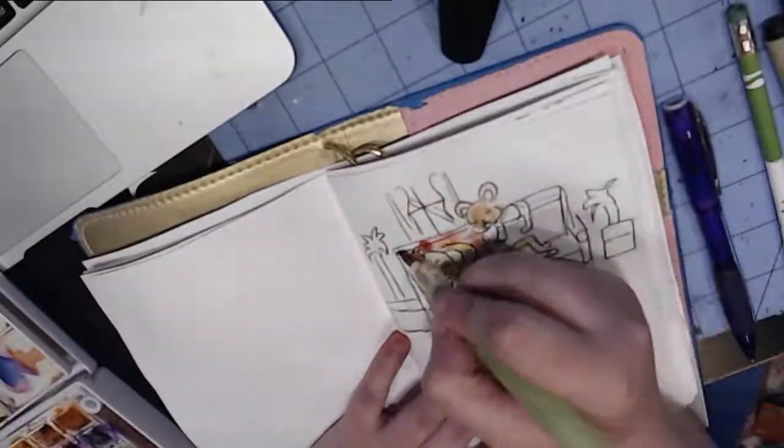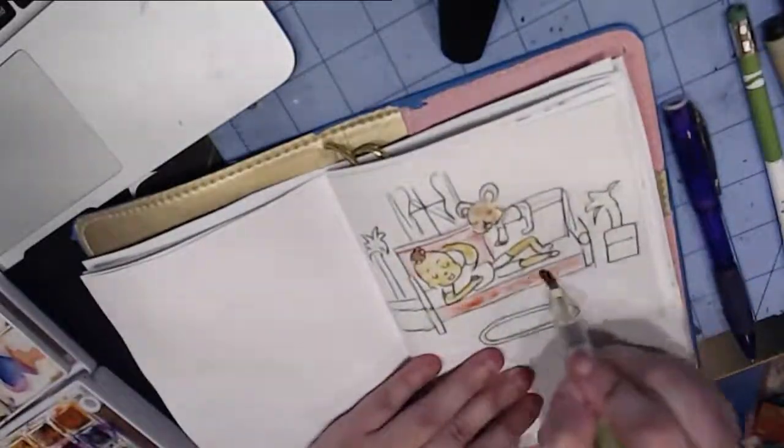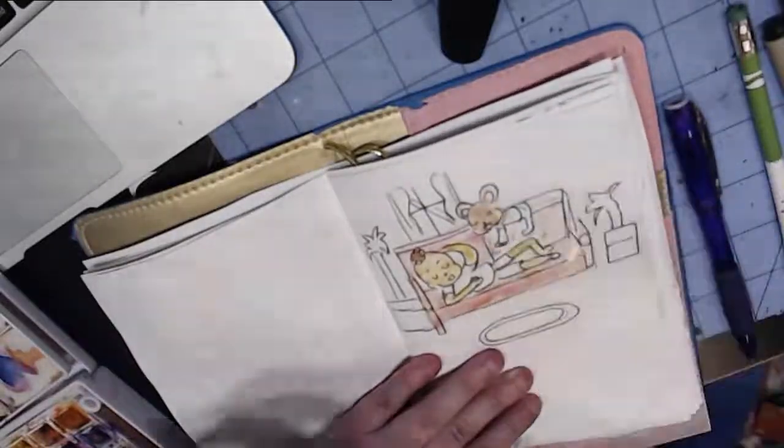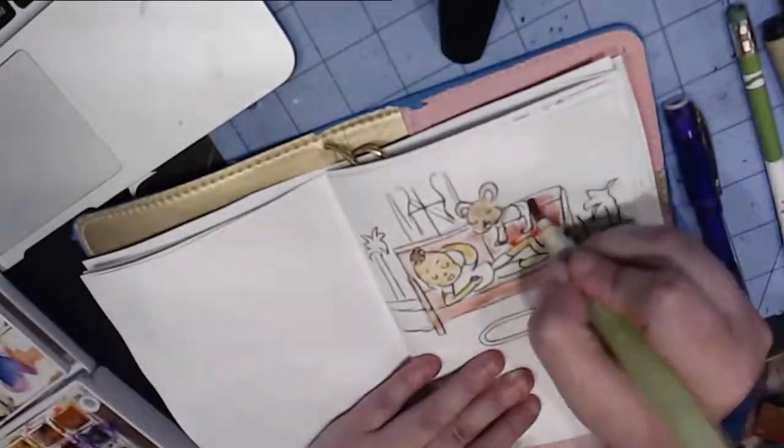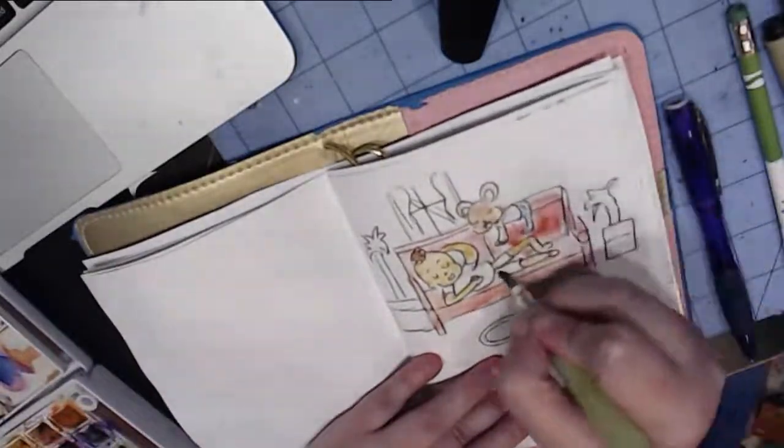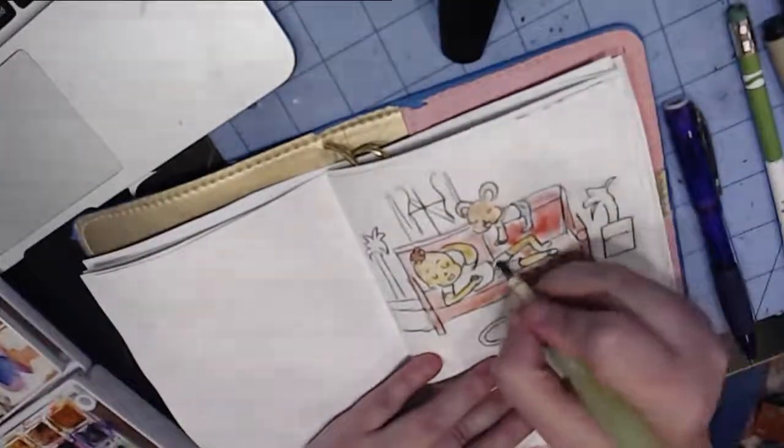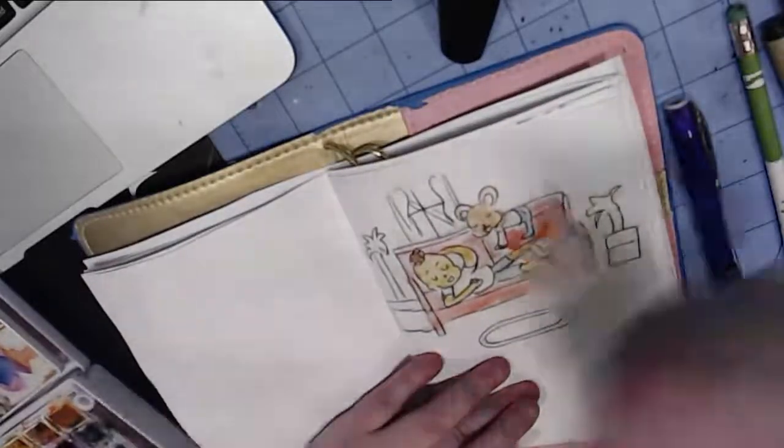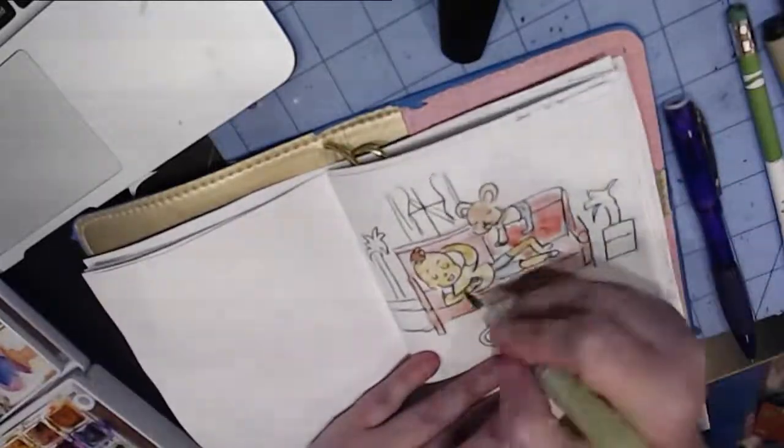By the way, if you're new to my channel, Owen and Theo are my main characters that I draw on a daily basis. I've been drawing them for a little bit over two years now. Theo's a teddy bear, he's four years old, Owen's eight. They're best friends,